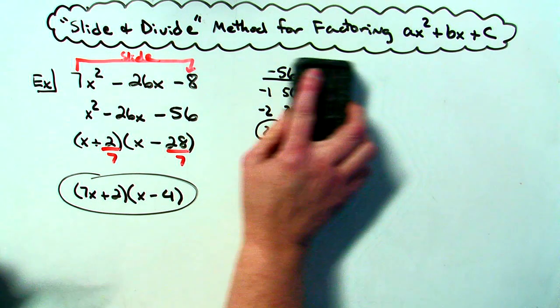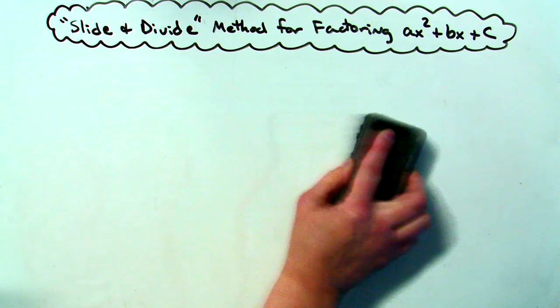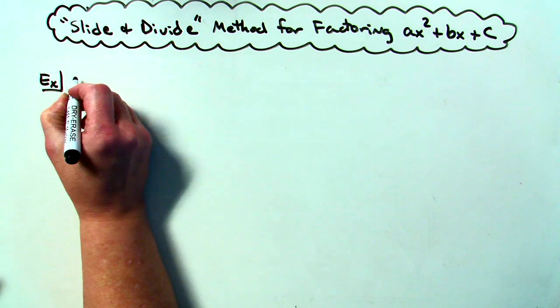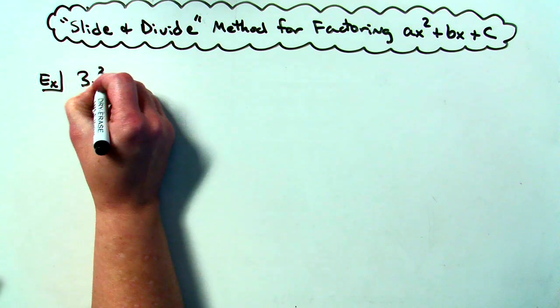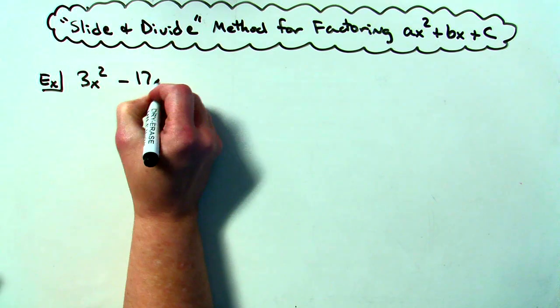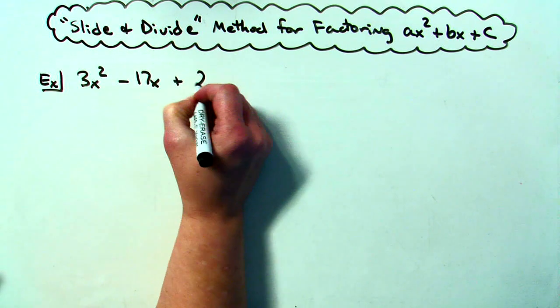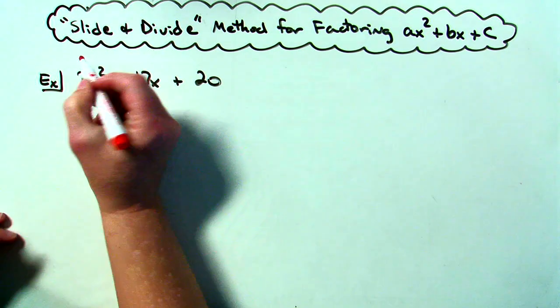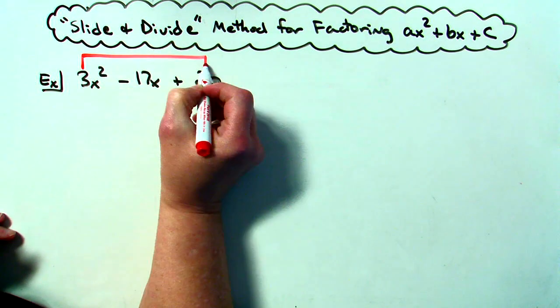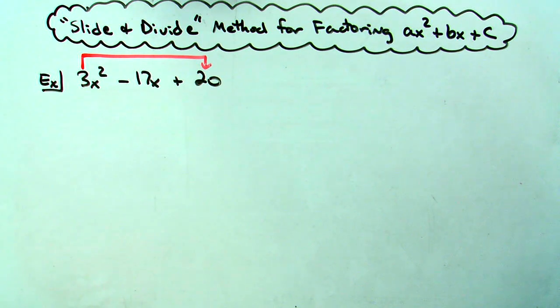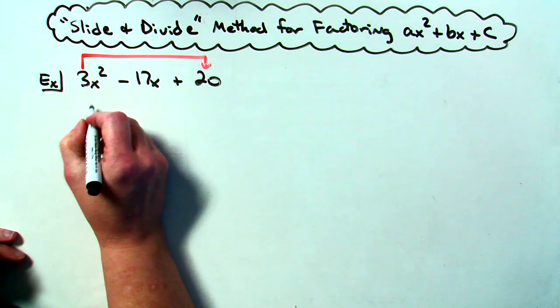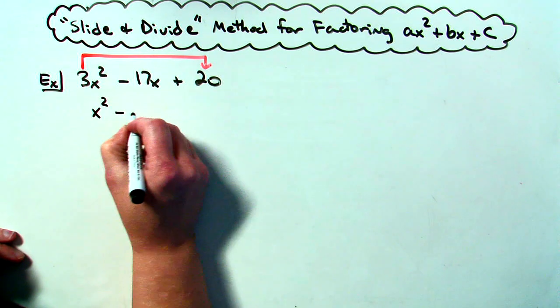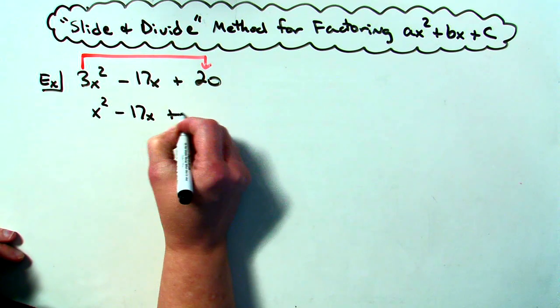Now let's real quickly work through another example. Let's suppose I've got maybe say a 3x squared minus 17x plus 20. So again I'm going to do the slide and divide. I'm going to slide 3 over and multiply 3 times 20 which will give me 60. So then since I slid it over it's gone in front. I've got an x squared minus 17x plus 60.